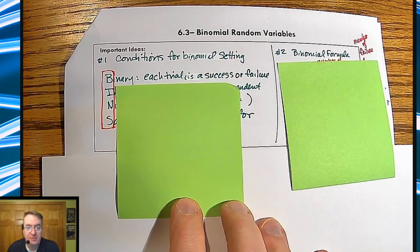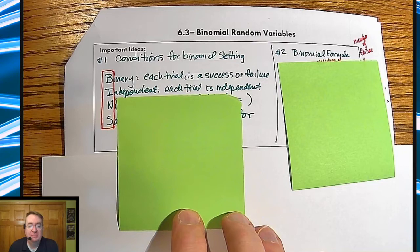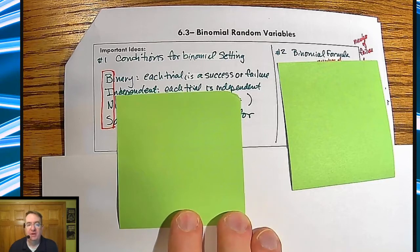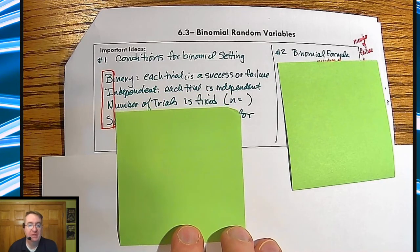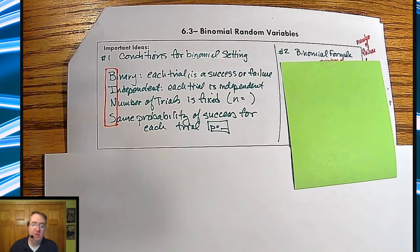Each trial can only be a success or a failure. It's not like three options. It happens or it doesn't. Each trial needs to be independent, so one trial happening doesn't affect anything in the other trial. Number of trials is fixed. So it says we're going to do this 20 times. It's not one of those instances where you go until you make it. And then same probability of success for each trial. So nothing's changing. You're assuming everything's staying the same throughout each different thing that you do.